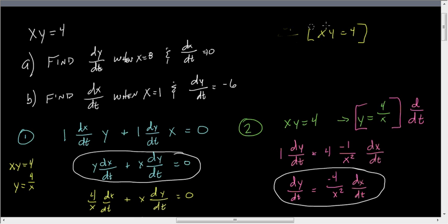And the one that uses the x values only is this one here. So we have dy/dt is equal to negative 4 over x squared dx/dt.